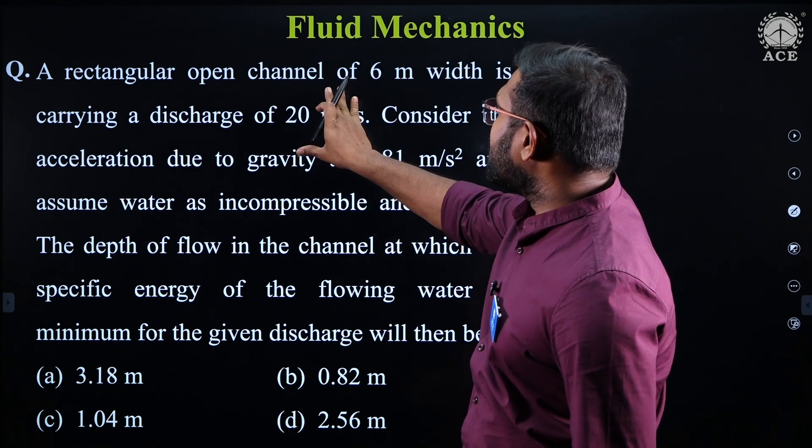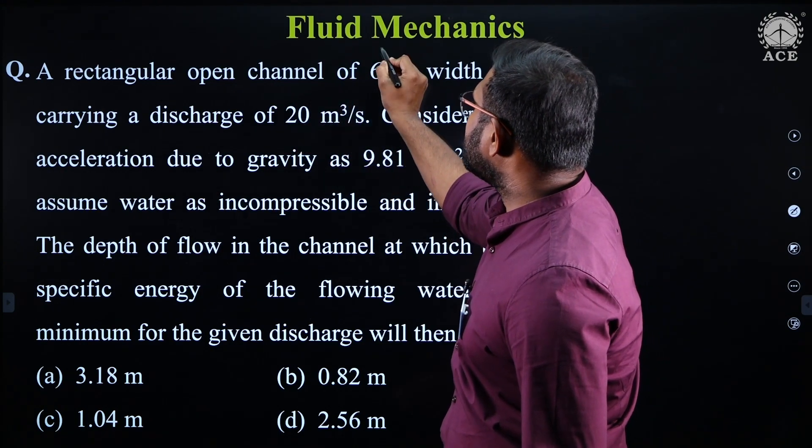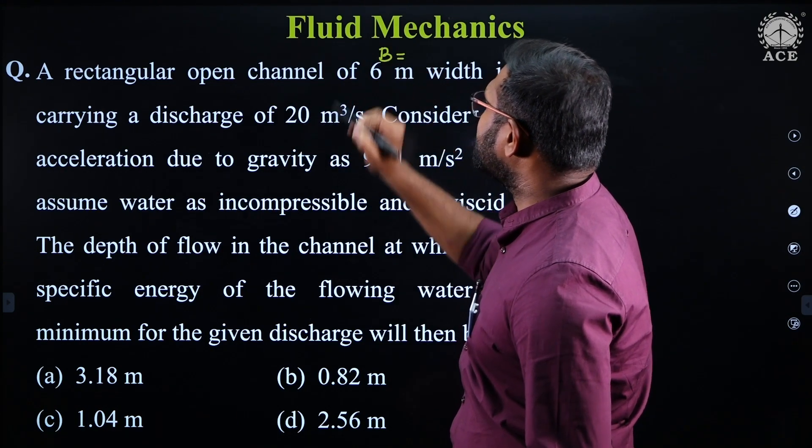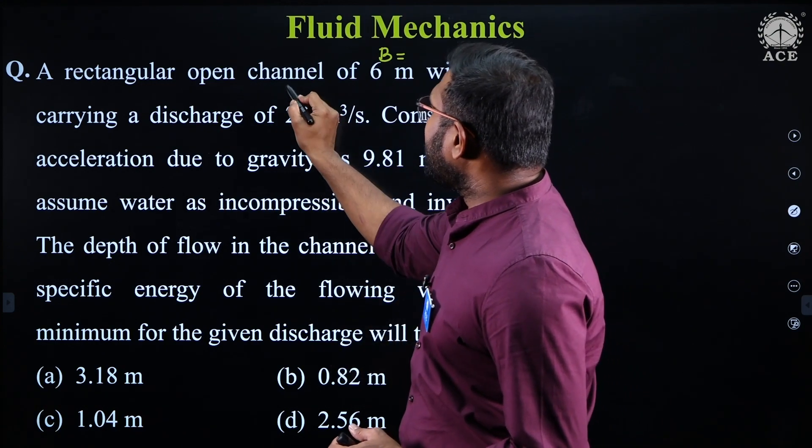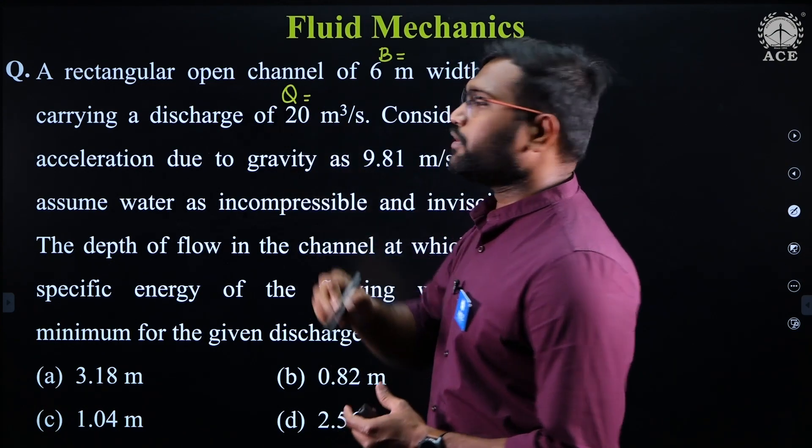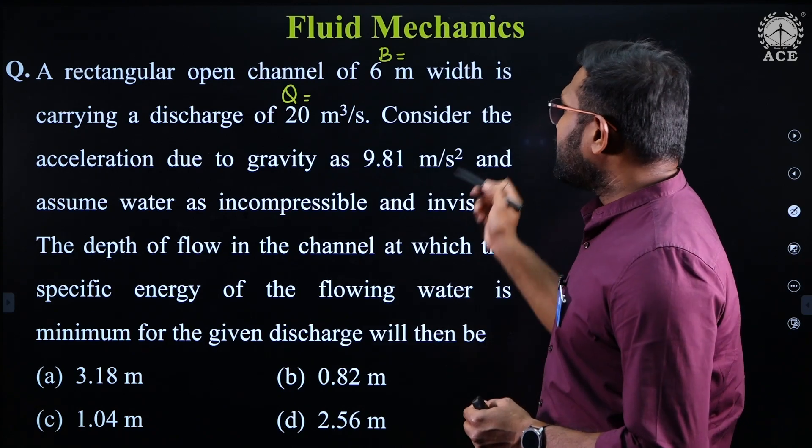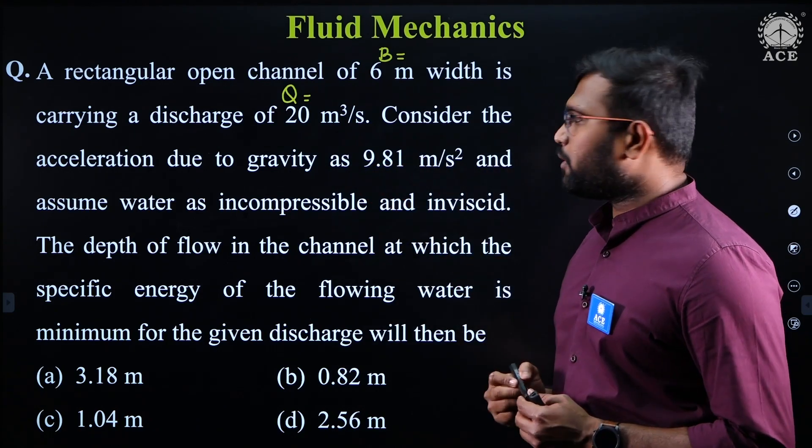A rectangular open channel of 6 meters width is carrying a discharge of 20 meter cube per second. Consider the acceleration due to gravity as 9.81.